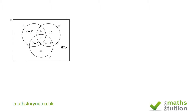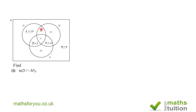We shall now answer the questions with all the gaps filled in. For the first question: find the number of students in D intersection M. We're looking at this region here, and clearly that's going to be 10 plus 5, so the answer is 15.